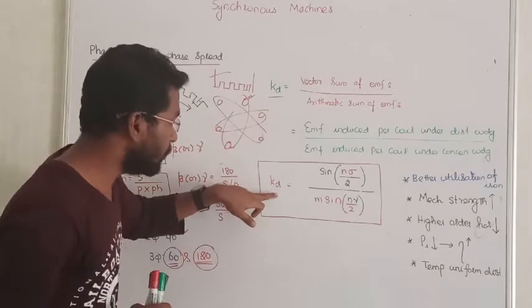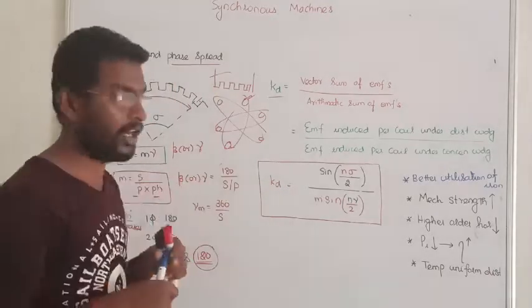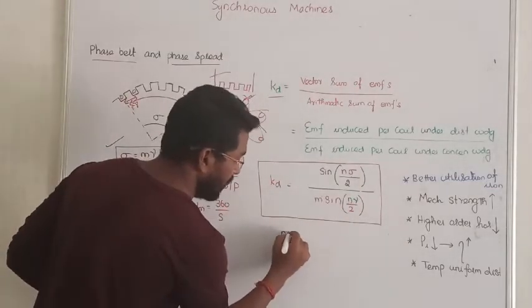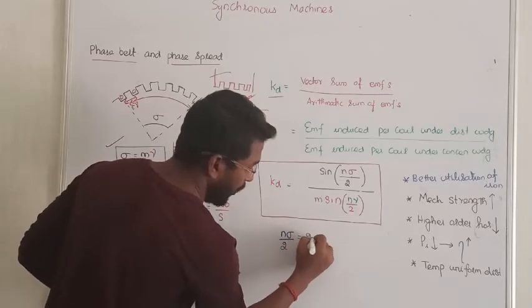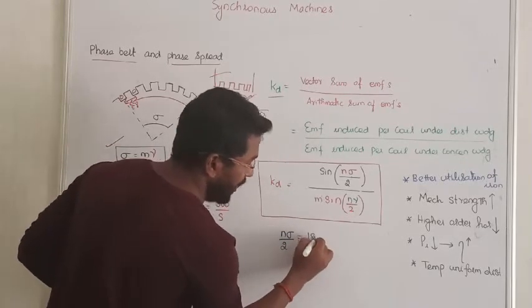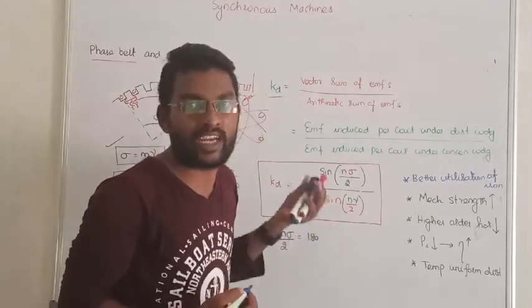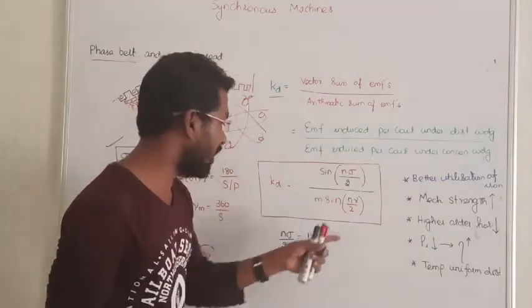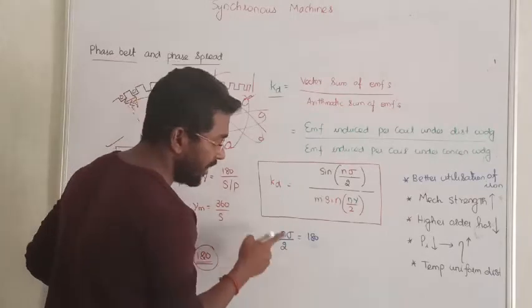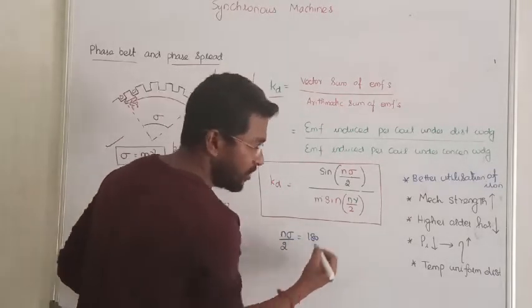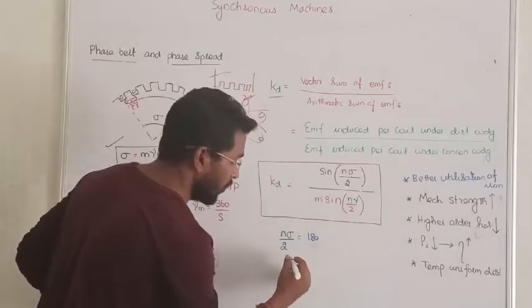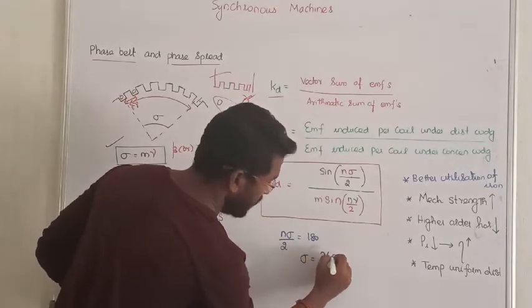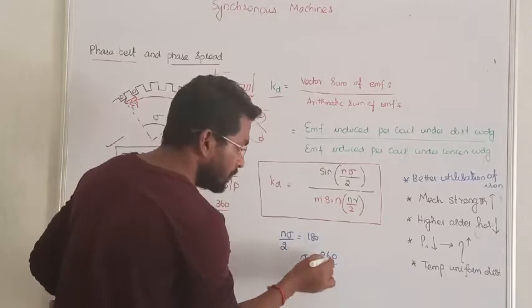Once again, distribution factor is directly proportional to induced EMF. When we substitute n times sigma divided by 2 equal to 180 degrees, the value of sin 180 is going to be 0. So n sigma by 2 equals 180, and sin 180 is 0. Therefore, distribution factor will become 0 for higher order harmonics. From this, the space spread sigma is going to be 360 divided by n. That is how we find the space spread to eliminate higher order harmonics.